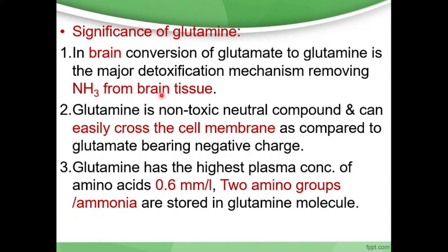The significance of glutamine in the brain: conversion of glutamate to glutamine. Glutamate contains ammonia, and the conversion of glutamate to glutamine is a major detoxification mechanism for removing ammonia from the brain tissue. Glutamate is combined with all the ammonia in the brain and transfers it in the form of glutamine. Glutamine is a non-toxic compound.